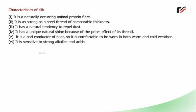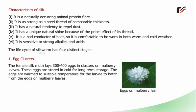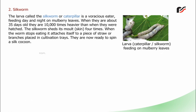The life cycle of the silkworm has four distinct stages. Stage one — egg clusters: the female silk moth lays 300–400 eggs in clusters on mulberry leaves. These eggs are stored in cold for long-term storage. The eggs are warmed to a suitable temperature for the larvae to hatch on mulberry leaves. Stage two — silkworm: the larvae called the silkworm or caterpillar is a voracious eater, feeding day and night on mulberry leaves. When they are about 35 days old, they are 10,000 times heavier than when they were hatched. The silkworm sheds its skin four times. When the worm stops eating, it attaches itself to a piece of straw or branches placed in cultivation trays. They are now ready to spin a silk cocoon.